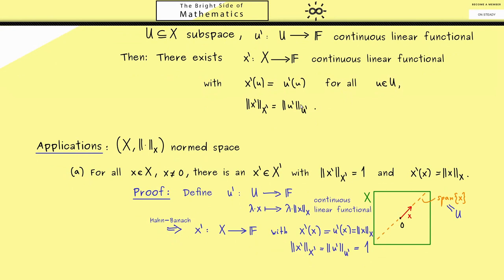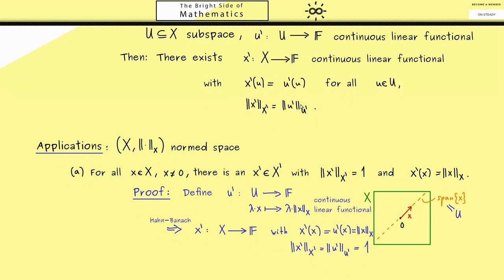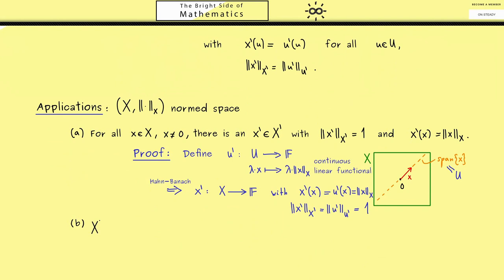Now using (a) we can immediately show the next important fact. It tells us that the dual space X prime separates the points of X. This simply means that for two different points x1, x2 we always find a functional x prime with different values for x1 and x2. So x prime of x1 is not equal to x prime of x2. Since this holds no matter which points you choose, the dual space X prime still holds the whole information what are the different points in X.